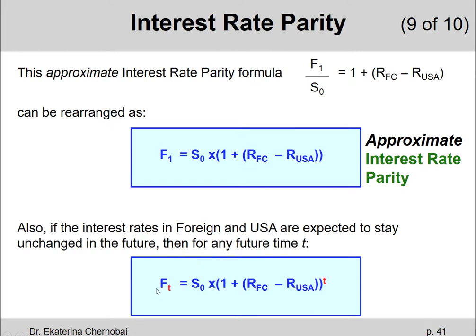In real life, forward exchange rates don't typically go beyond one-year forward rates. On one of the earlier slides where I was explaining how exchange rates are quoted and showed you that table from the Wall Street Journal, you probably only remember seeing the one month, the three month, and the six month forward rates. So anything beyond one year forward rates does not really exist in real life.